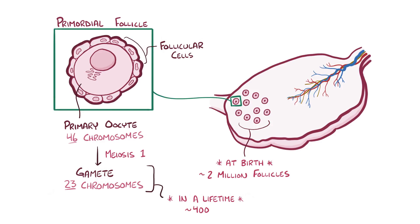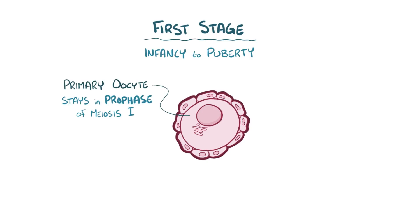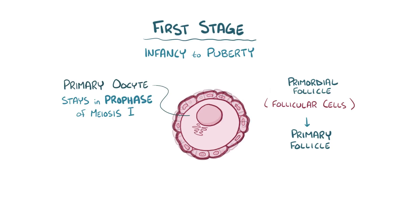The process of oocyte development follows that of follicular development, which can be broken into three stages. The first stage lasts from infancy to puberty. During this stage, the primary oocyte remains stuck in the prophase step of meiosis I — in other words, the cell is living but not dividing. Meanwhile, the primordial follicle turns into a primary follicle, meaning that the follicular cells surrounding the primary oocyte develop into granulosa cells.